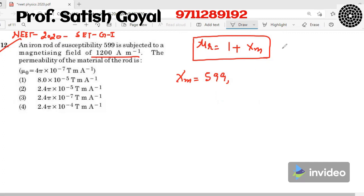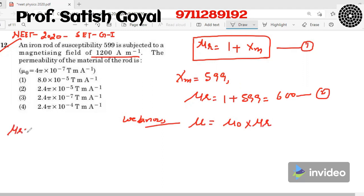So mu r is equal to one plus 599, so it is equal to 600. And we know that permeability, which is equal to mu naught into mu r, actually relative permeability which is mu by mu naught.